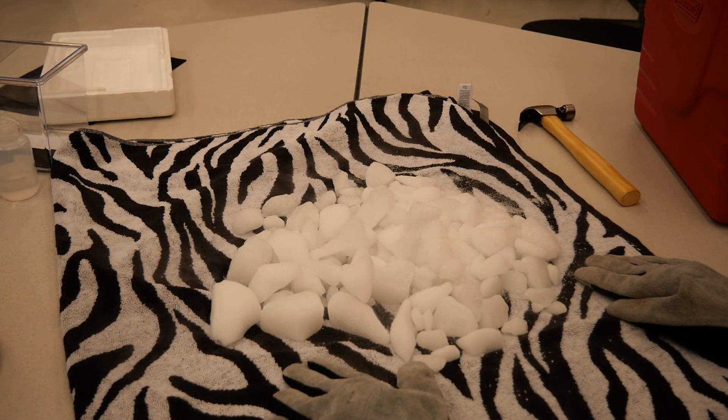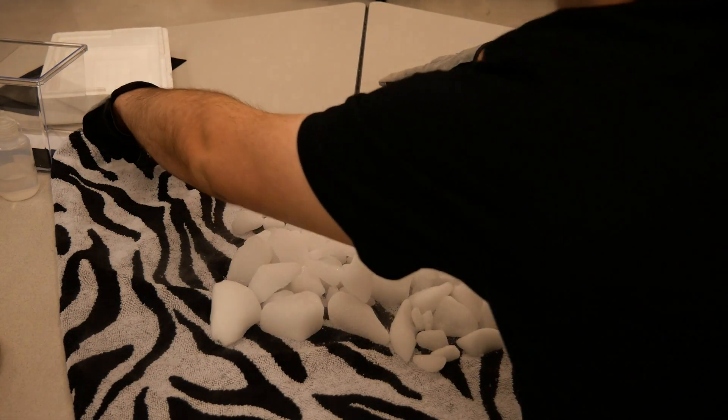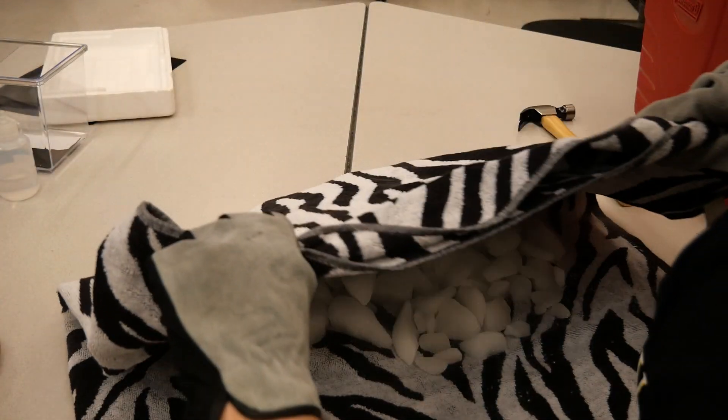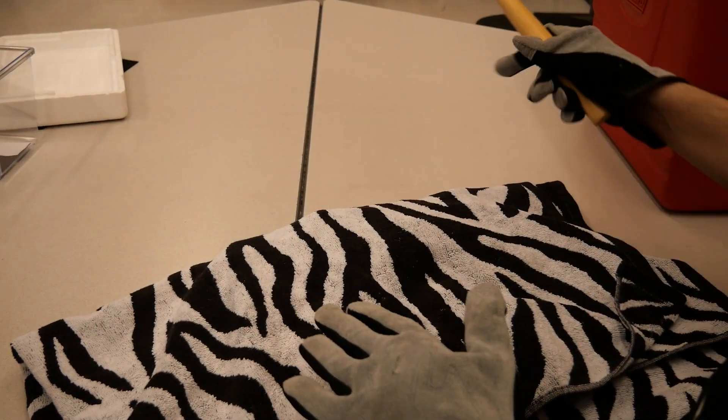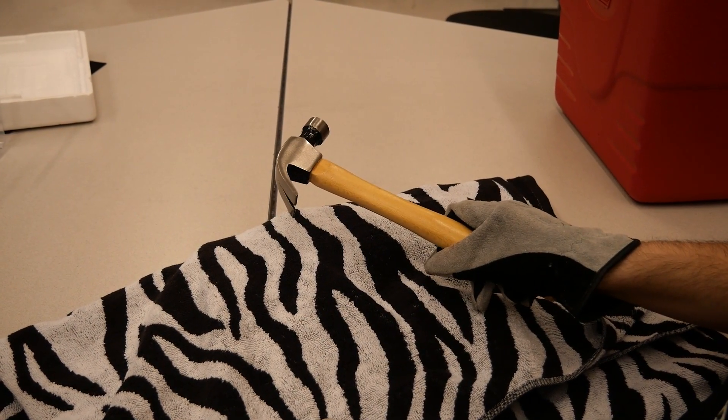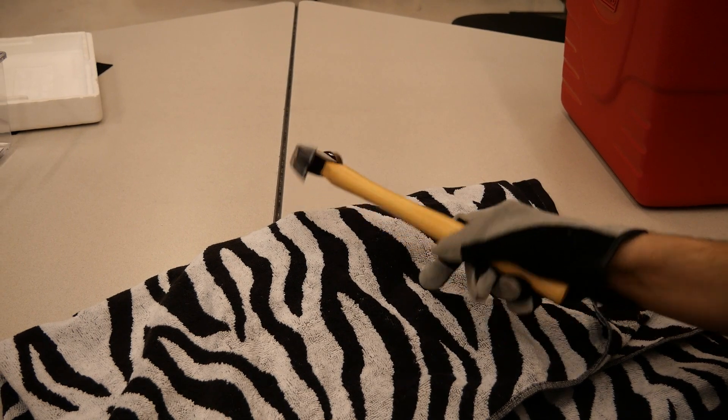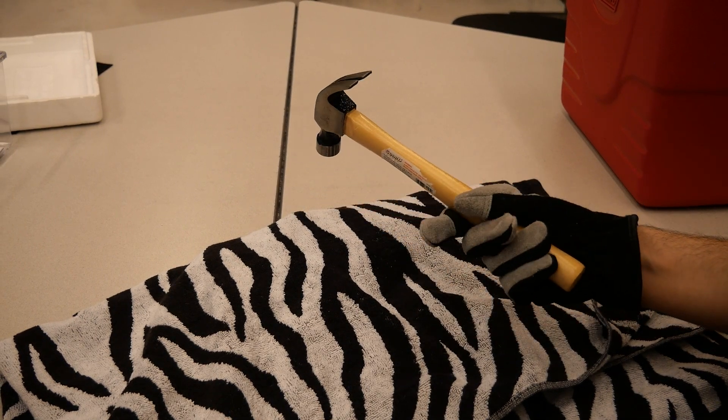Once your dry ice is out on your towel, fold your towel over the dry ice. Pick up your hammer and we'll start smashing the dry ice. Make sure to use the flat side of the hammer instead of the head. You'll be able to crush more ice effectively that way. Your goal is about gravel-sized pieces of ice.